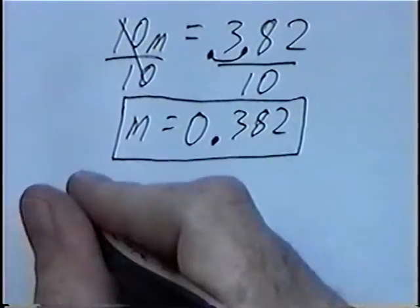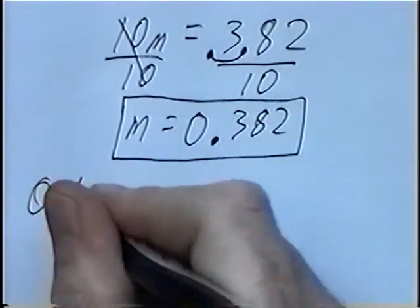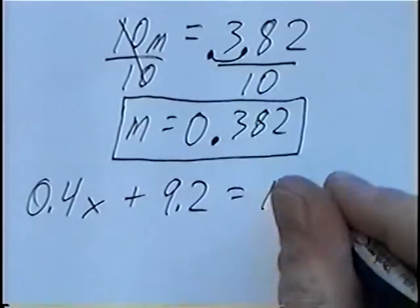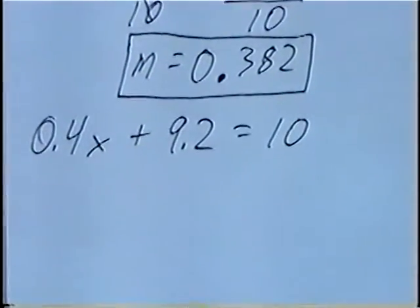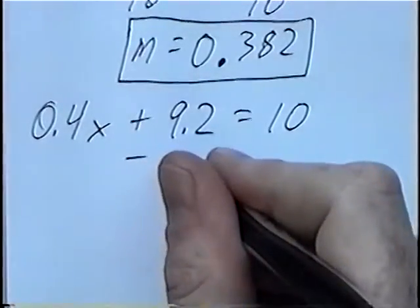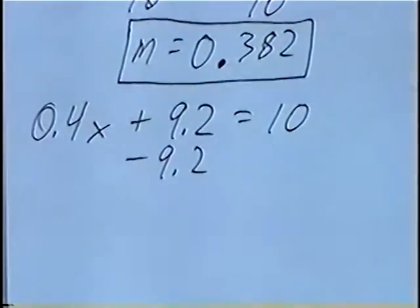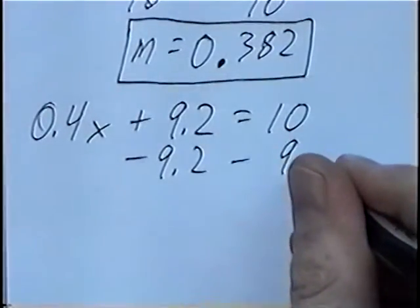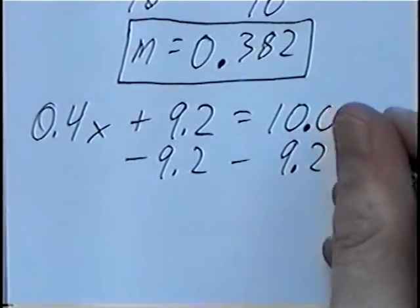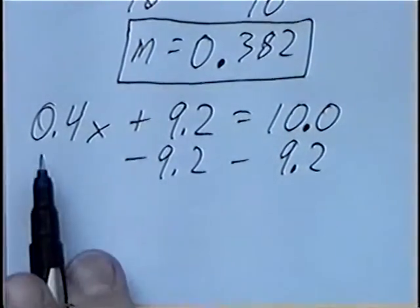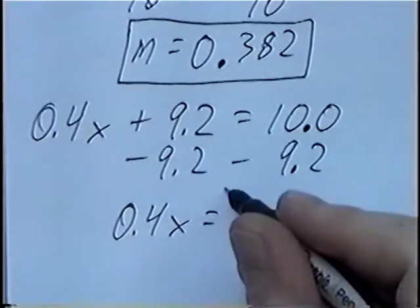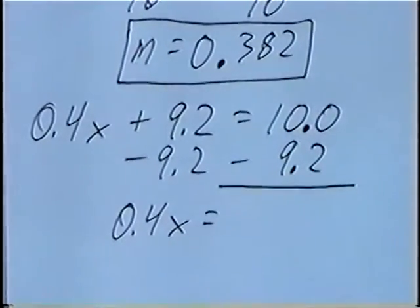Second question, and last question for the section: 0.4x plus 9.2 equals 10. Again, solving for x — the number away from x is adding 9.2. We can cancel that by subtracting 9.2 on both sides. If 10 does not have a decimal, we can add a decimal point after and put a zero. 0.4x would stay the same.